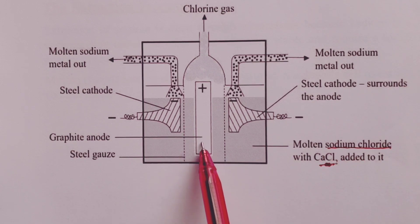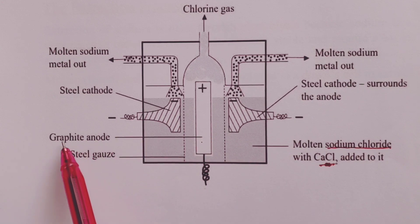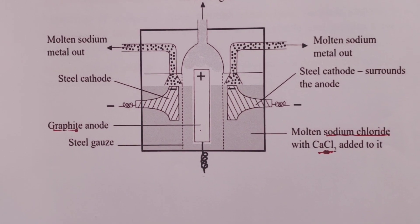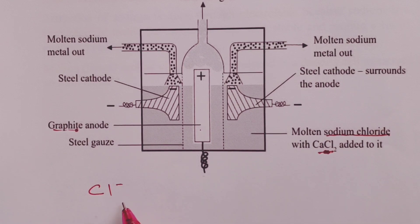Now at the center of the cell we have a graphite anode where chloride ions are oxidized to form chlorine gas. The equation for the reaction at the anode becomes: 2Cl⁻(l) → Cl2(g) + 2e⁻.